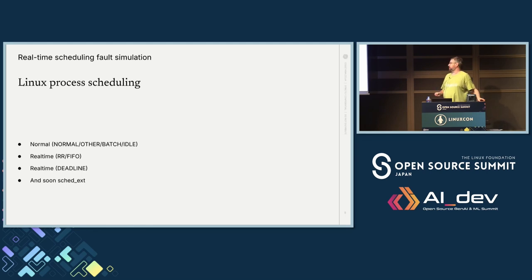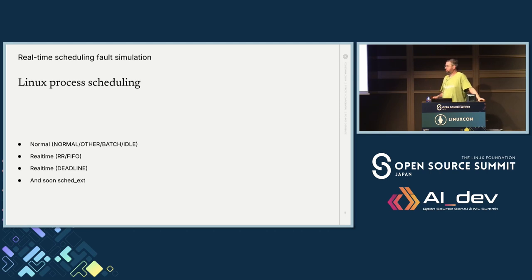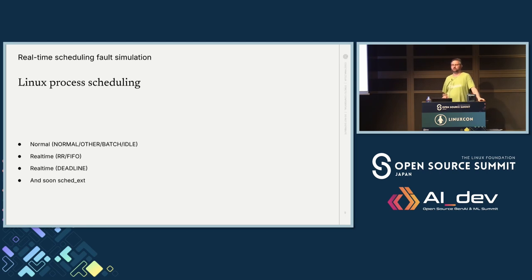So, Linux process scheduling. Basically there's normal stuff — this is what things like your web browser are probably doing. Not very interesting, but some of the techniques will work with that. There are two sets of real time: round robin and FIFO. They're generally used for things where you want to respond to an event, process it, and move on — things like video decoding will often use that to make sure your performance for YouTube or whatever is good.